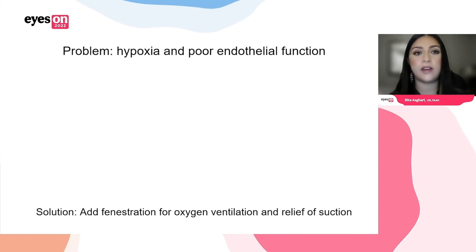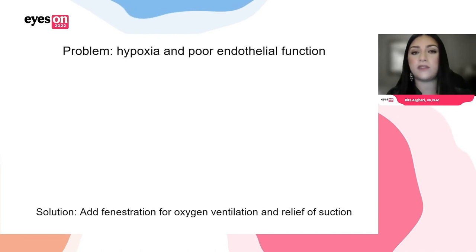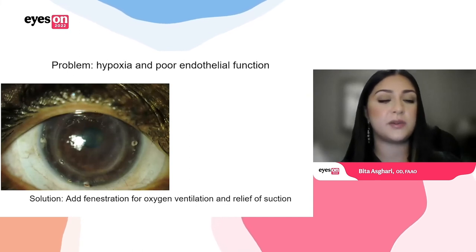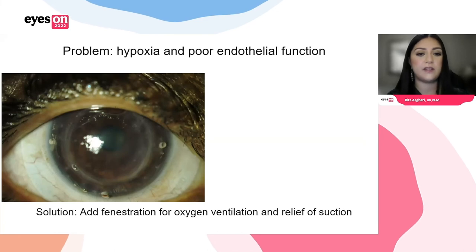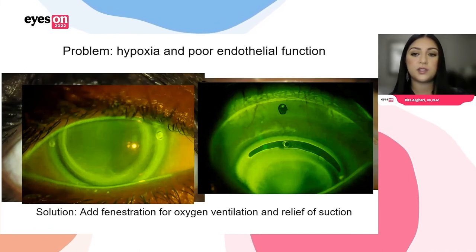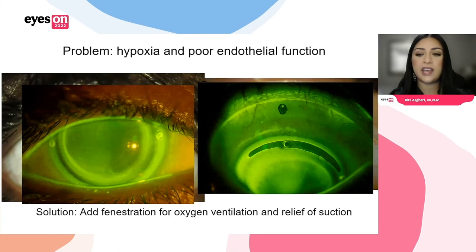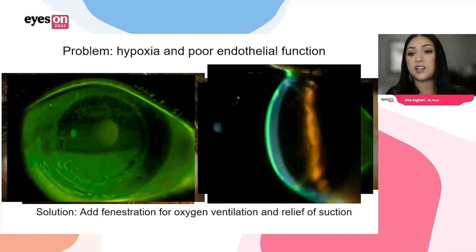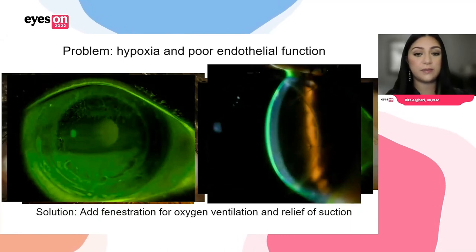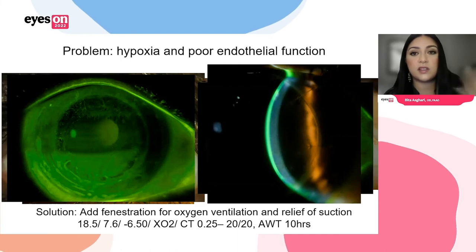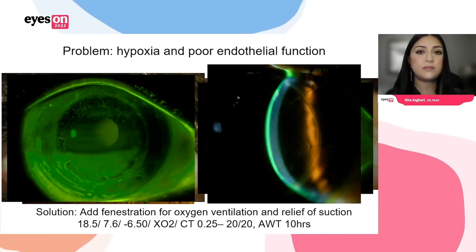Not all scleral lens failures are truly failures — they just may need modifications. We added fenestrations: there were actually three, at three, six, and nine in each of those mid-peripheral corneal zones. You can see the fourth fenestration on the superior aspect, and there's a bubble actually traveling between the different fenestration points. The nice part is this lens actually did the trick — it took care of the corneal edema, improved her average wear time, maintained her vision at 20/20, and she's been doing fine ever since. This was another patient on her route to scleral lens failure, and we were able to salvage it.